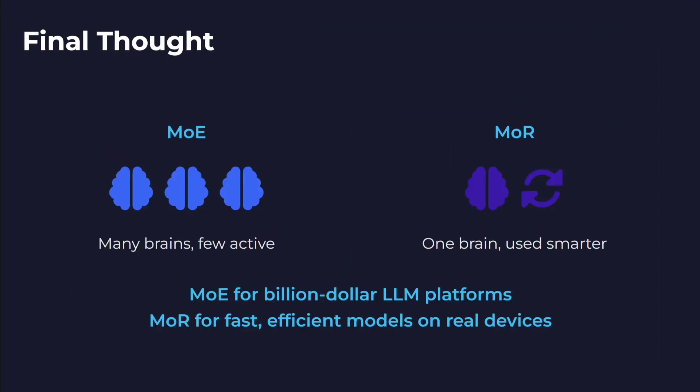For final thoughts: MoE is like many brains with fewer activated; MoR is one brain used multiple times. MoE is for billion-dollar LLM performance, while MoR is for fast, efficient models. MoE is mostly suited for bigger models, while MoR is suited for smaller models and edge devices. MoR is beating MoE at the same parameter count at a small scale, but MoR hasn't been tested for huge models yet, so we still need to wait and see. Thank you so much.